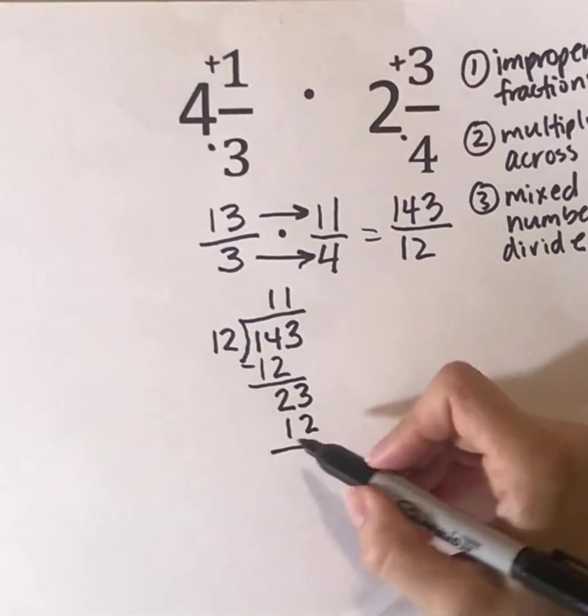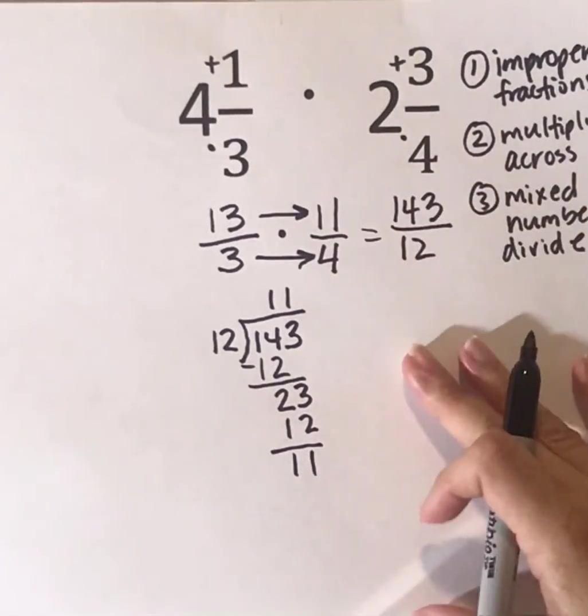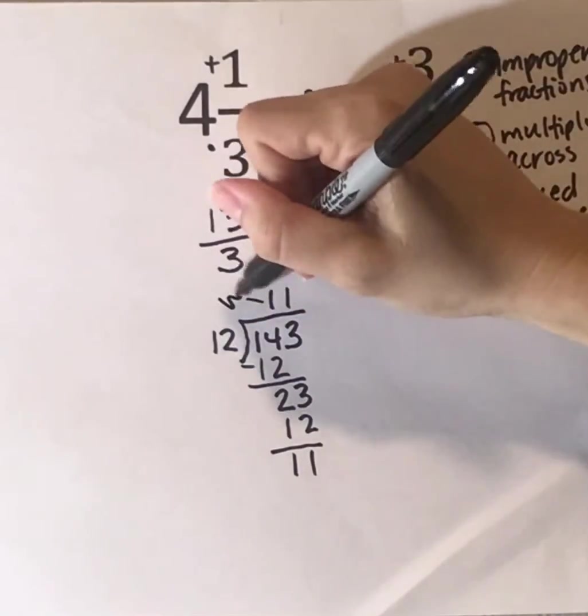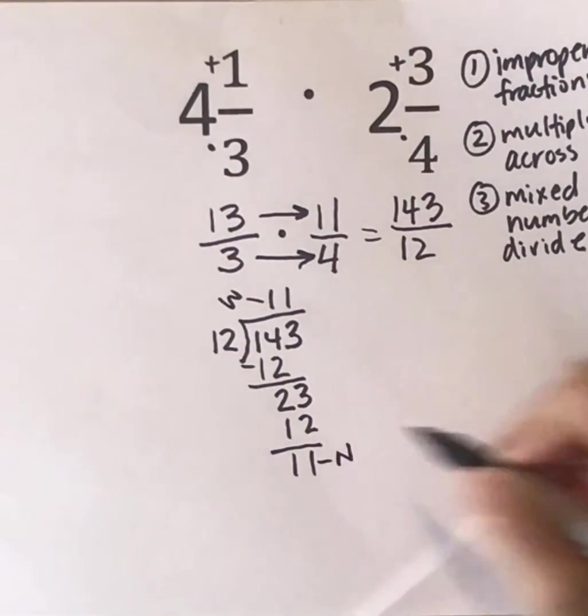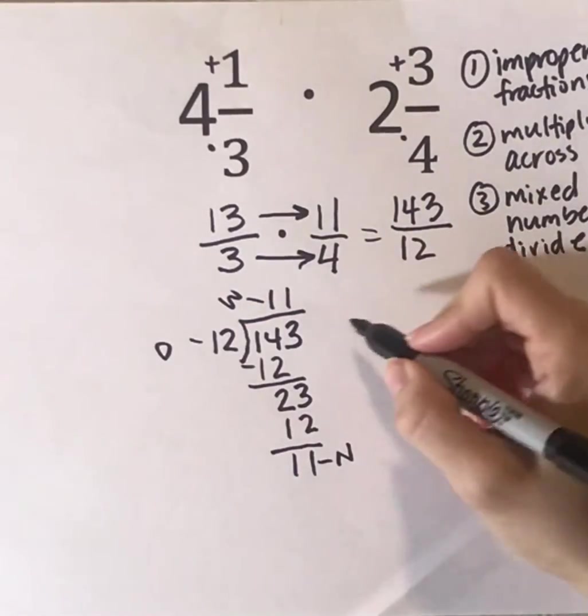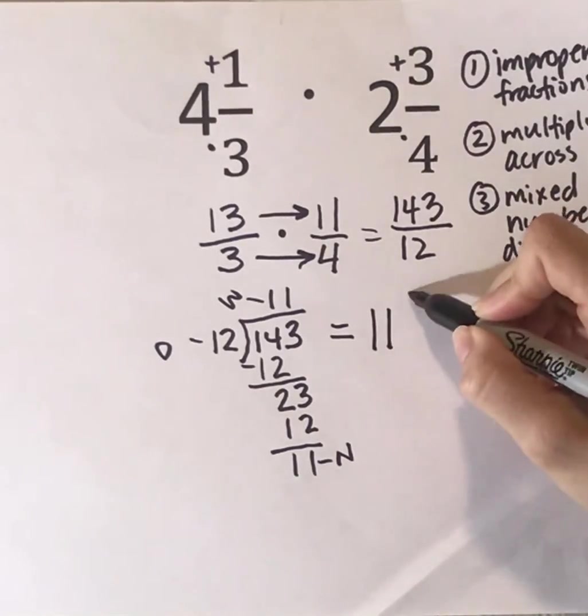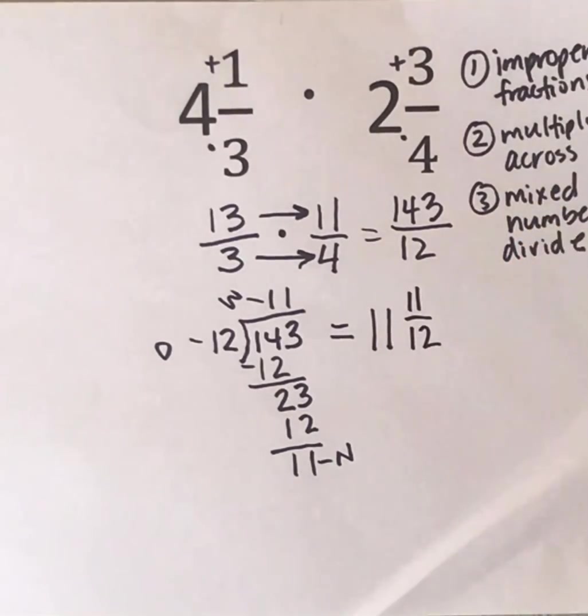And you get 11. So now, to make this into a mixed number, remember that this becomes the whole number, this becomes the numerator, and this becomes the denominator. So my answer is going to be 11 and 11 twelfths.